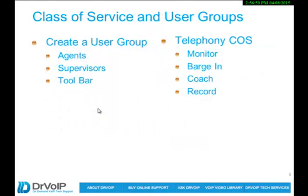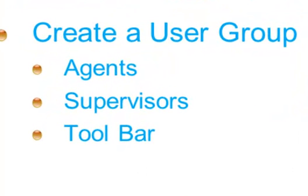The first thing we'll do is create these user groups. We want to create a set of privileges and apply them to a group called agents, and another set of privileges to apply to supervisors. Typically, supervisors have privileges like barge-in, monitor, record, and coach. These privileges are applied against agents who have the opposite privilege — they expect to be monitored, barged in on, recorded, and coached. Those two user groups work together to create that do/be-done-to relationship.